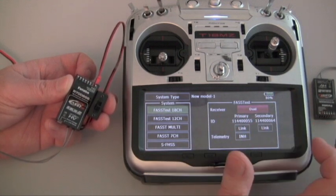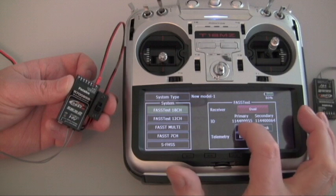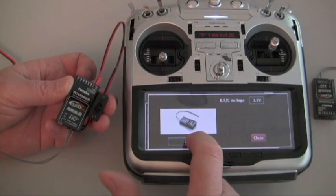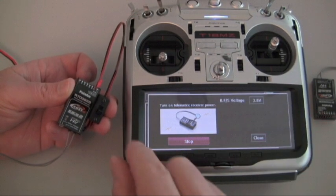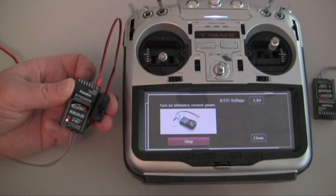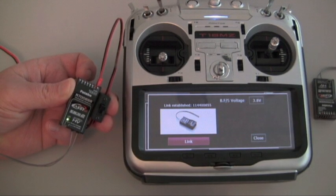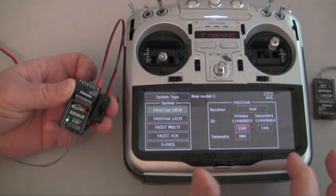Next thing I'm going to do is to link the first receiver. I'm going to hit the link button. I'm going to start the linking process on the transmitter and then turn on the receiver. As soon as it establishes a link it lets you know. You can close it.